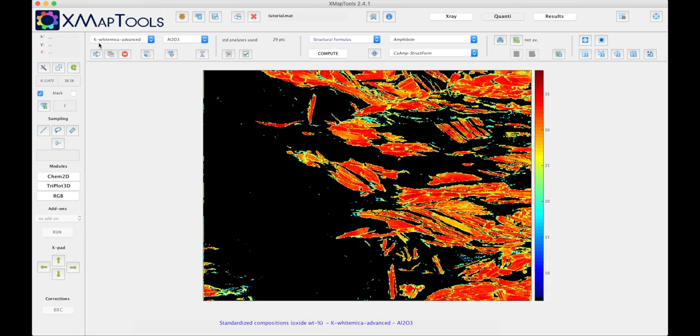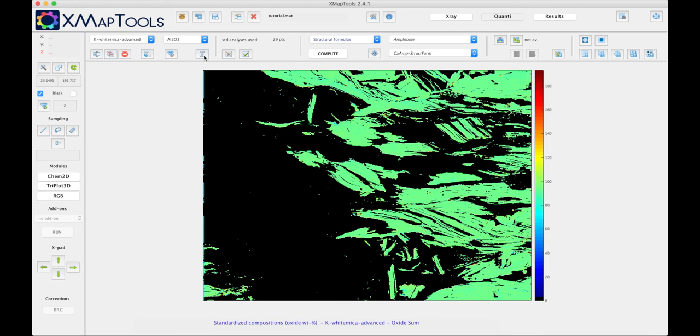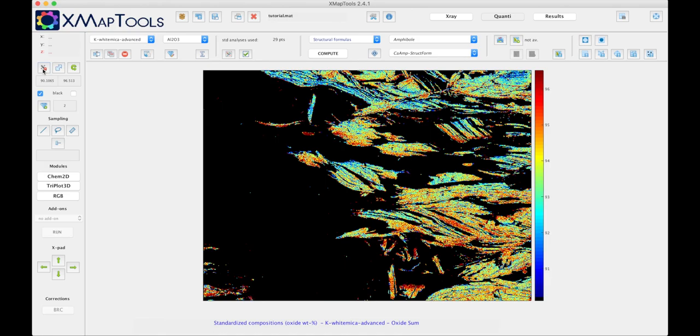Now I obtain a white mica advanced calibration and I can check that everything is fine by calculating the sum of oxide using this function and auto contrast. I see that the sum is between 91 and 96, what we would expect for this white mica.